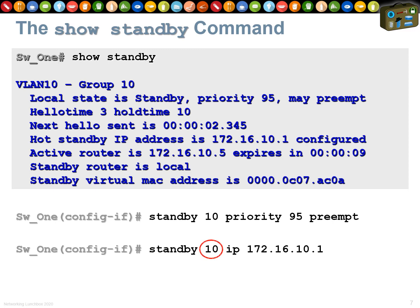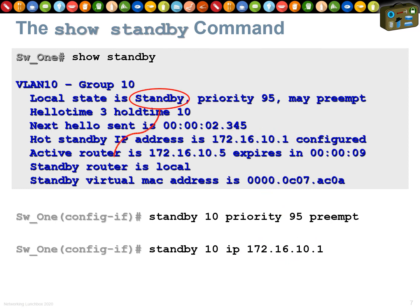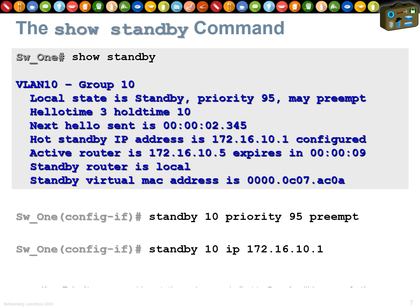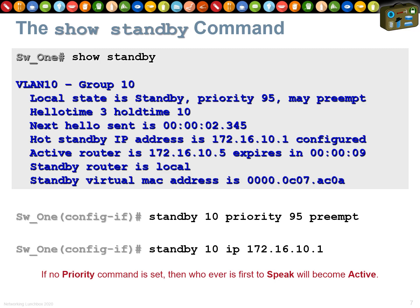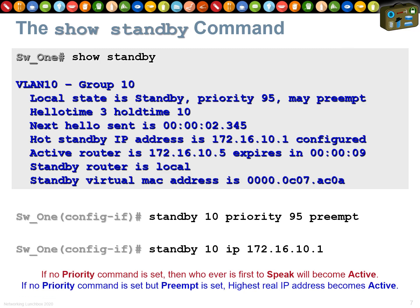The output shows `standby 10 ip` and the virtual IP address, again confirming the group number. Currently this router's local state is standby, and the active router is 172.16.10.5 — that's the real IP address of the currently active router, expiring in nine seconds. If no priority is set, whoever speaks first becomes active. But if no priority is set but preempt is configured, the router with the highest real IP address becomes active. Group numbers ensure unique MAC addresses so switches on the fringe don't see the same MAC on two different VLANs.